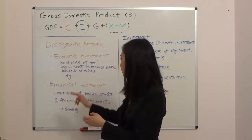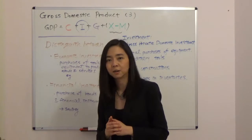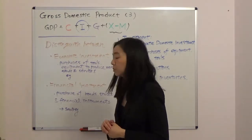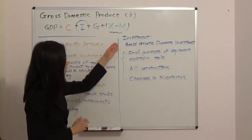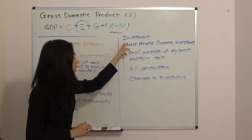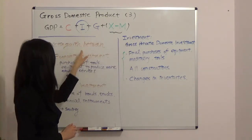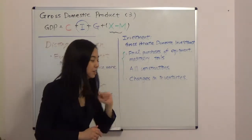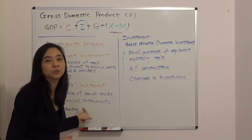So to economists, financial investment is more like saving. So when we talk about investment from now on, when we talk about investment in GDP, we're talking about economic investment. We're not talking about financial investment.